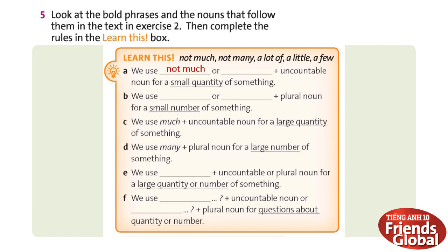A. We use not much or a little with uncountable nouns for a small quantity of something. B. We use not many or a few with plural nouns for a small number of something. C. We use much with uncountable nouns for a large quantity of something. D. We use many with plural nouns for a large number of something. E. We use a lot of with uncountable nouns for a large quantity of something. F. We use how much with uncountable nouns, or how many with plural nouns, for questions about quantity or numbers.